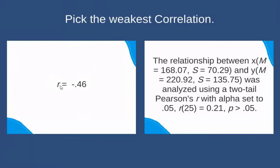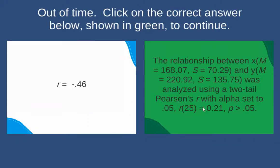Here is our correlation, negative 0.46, and we're comparing it with the correlation reported on the card on the right. This is an APA style write-up. We're told the descriptive statistics for the first and second variables, that it was analyzed using a two-tailed Pearson's R, our alpha is 0.05, with 25 degrees of freedom. The correlation value is 0.21 — that's the relevant piece of information for this game — and the p-value was greater than or equal to 0.05, so we would retain the null. Importantly, the Pearson's R value is 0.21, and since it's closer to 0 than negative 0.46, it is a weaker correlation.